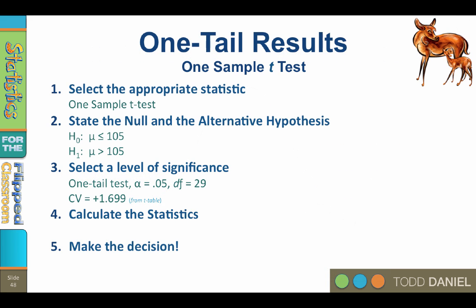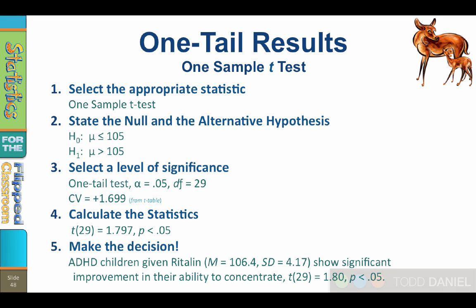Returning to our five steps of hypothesis testing, our t of 1.797, which we will round up to 1.80, exceeds the critical value of 1.699. So step 5, make the decision. ADHD children given Ritalin show significant improvement in their ability to concentrate. t with 29 degrees of freedom equals 1.80 p less than 0.05.